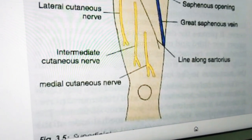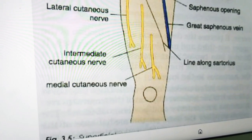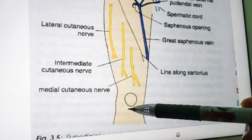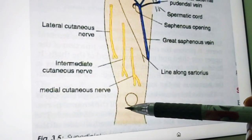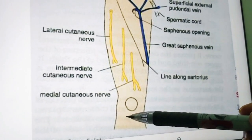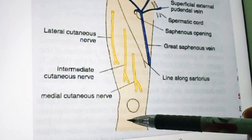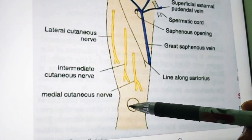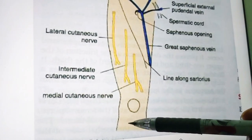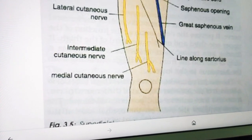The patella is developed in the tendon of quadriceps femoris. It is easily seen and felt in front of the knee and can be moved freely in a fully extended knee. Just below the patella you can find the tibia bone, and on the anterior side there is a prominence called the tibial tuberosity.